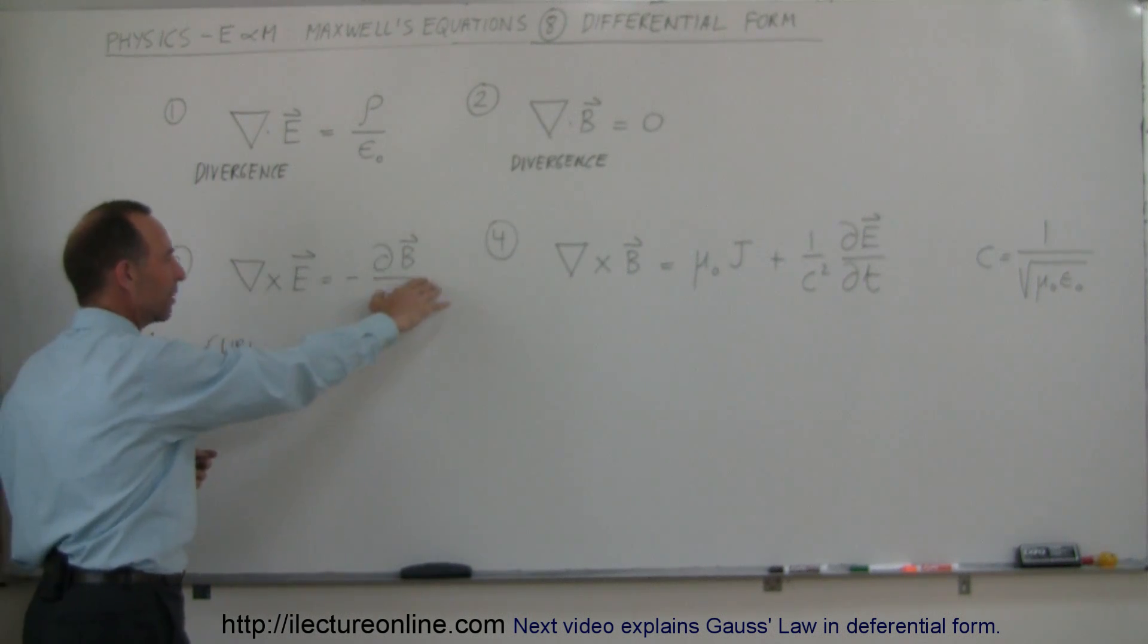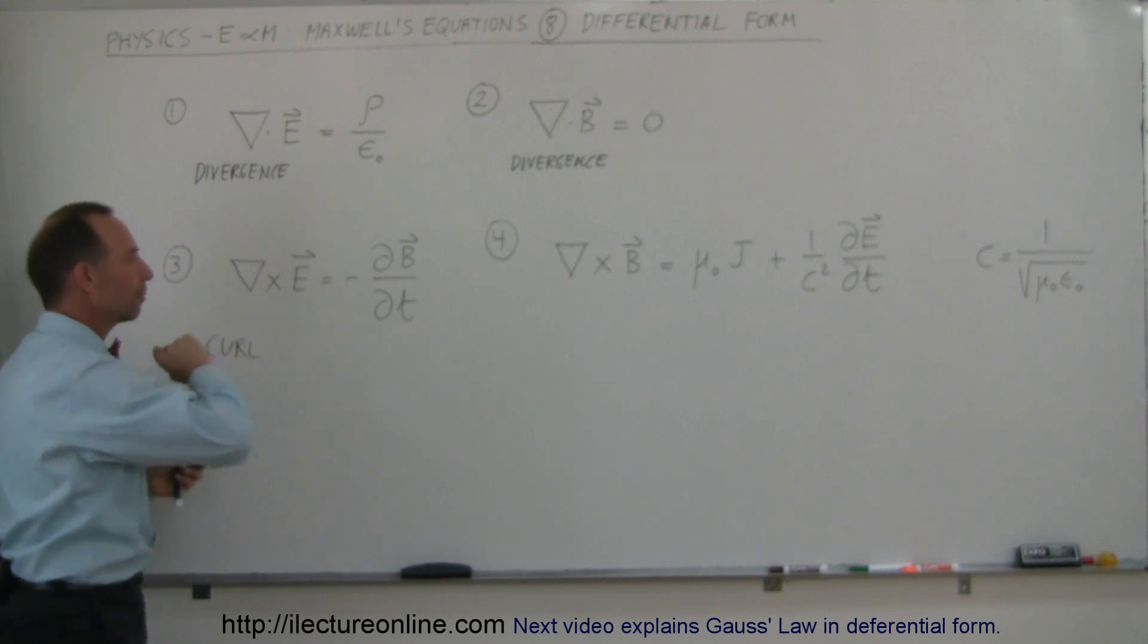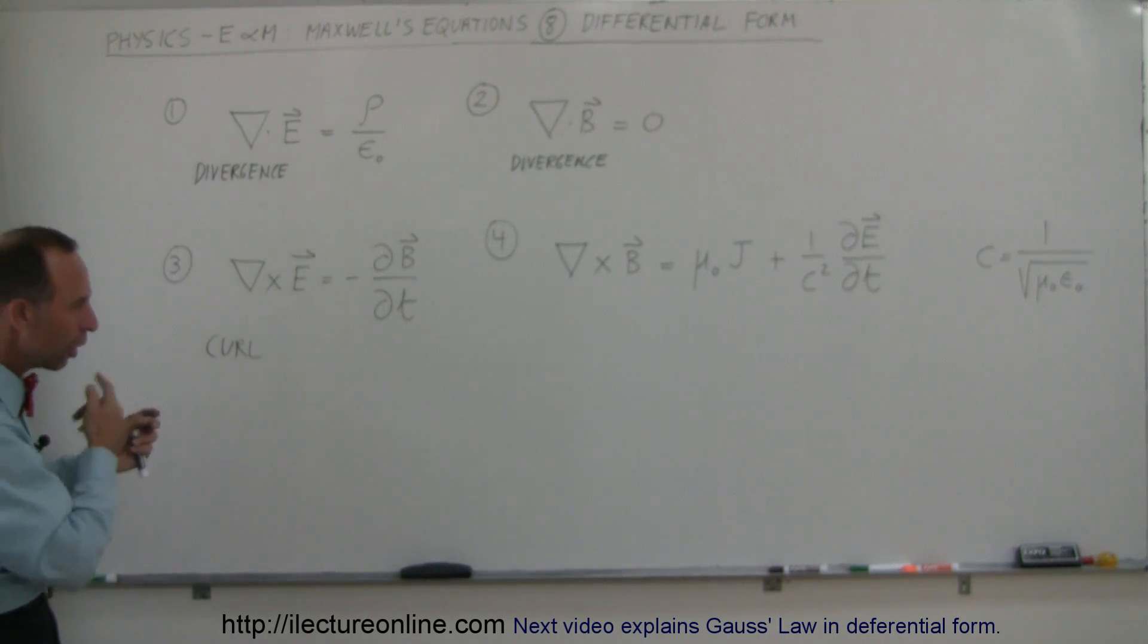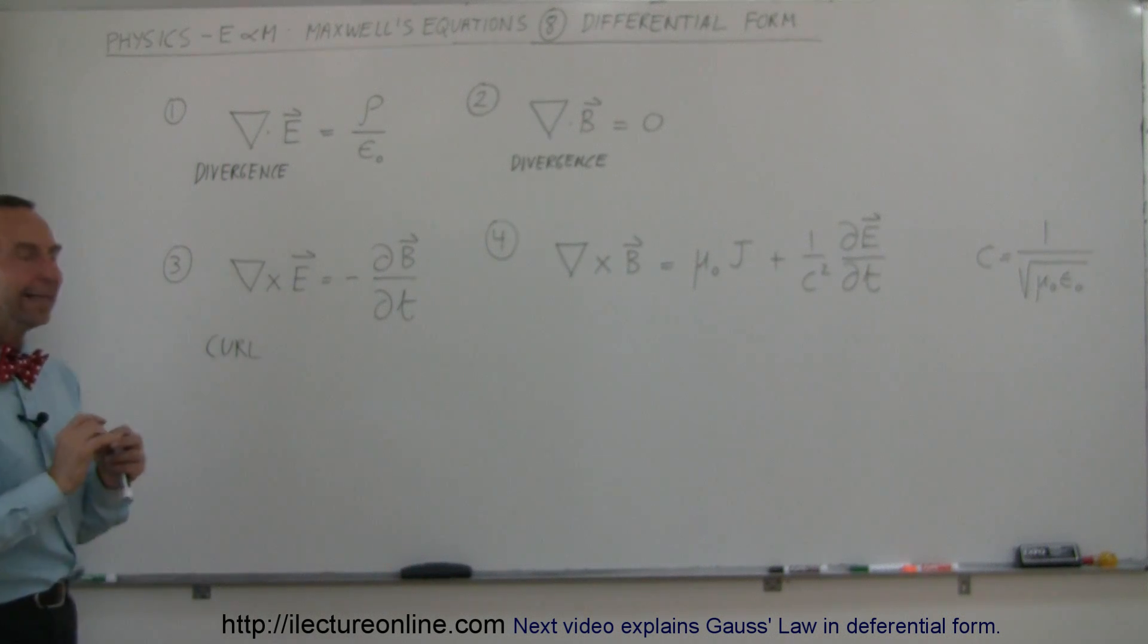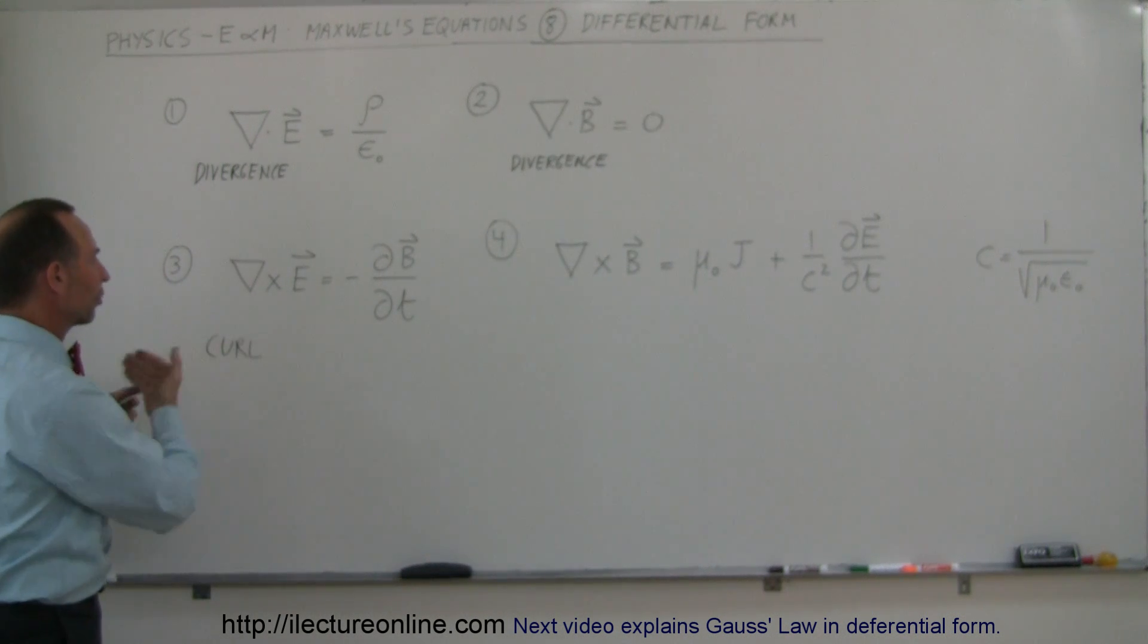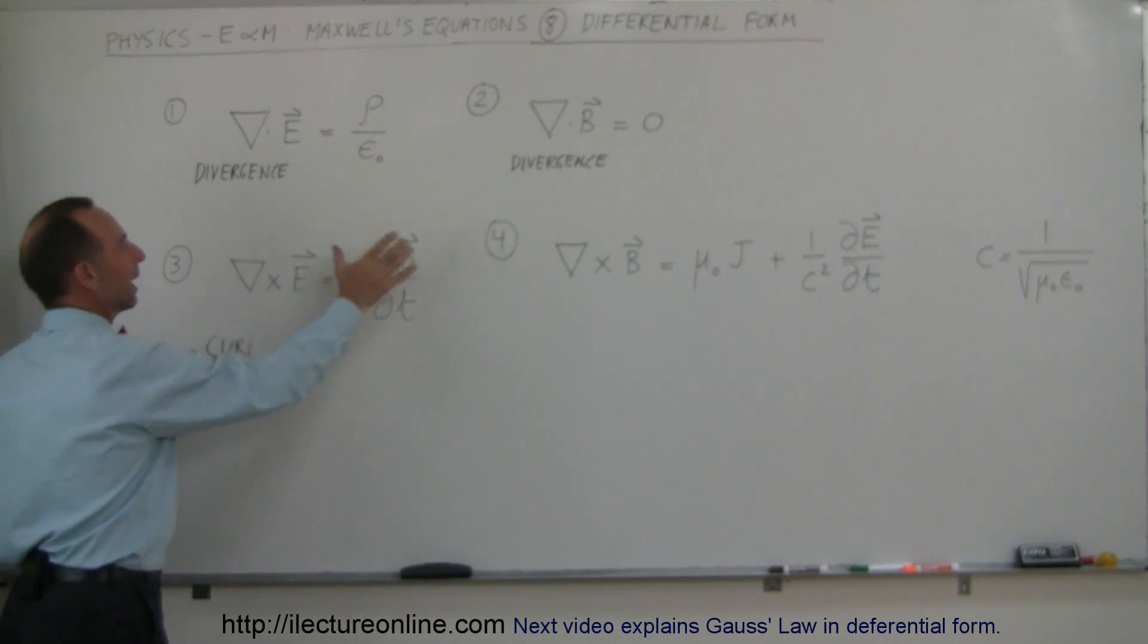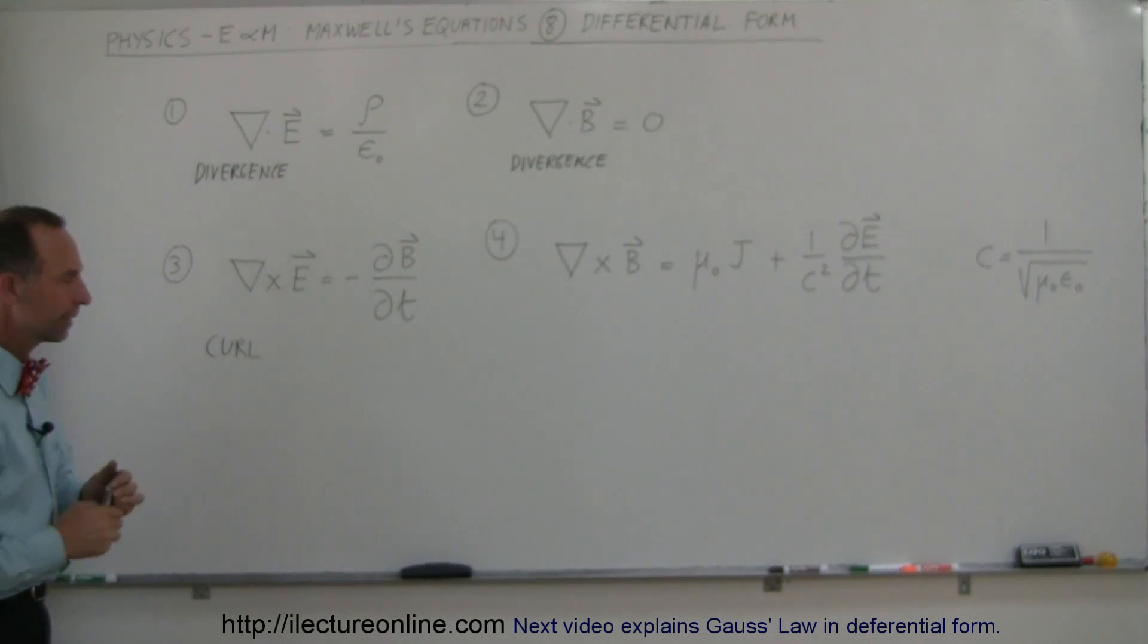If there's a change in magnetic field you're going to have the presence of an EMF along a circular path and that's why this is called a curl. Therefore as we go around the circular path we can see that there will be a potential difference and this is caused by the change in magnetic field.